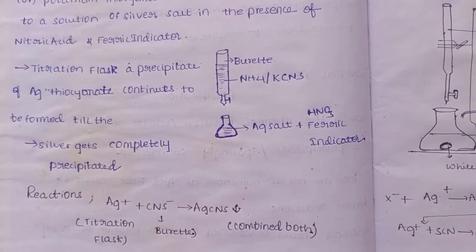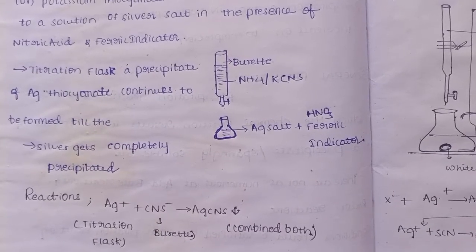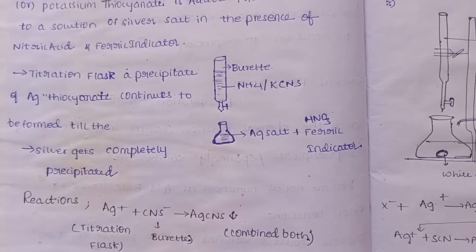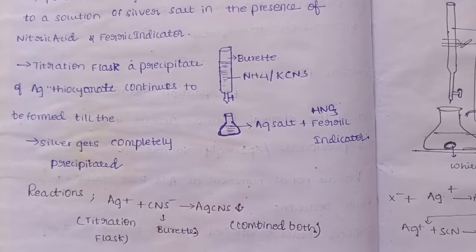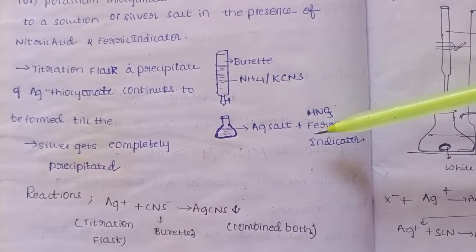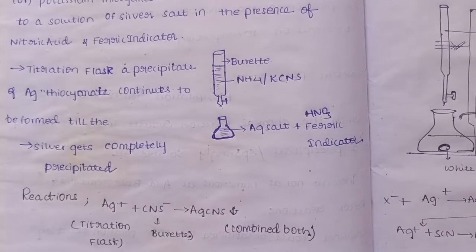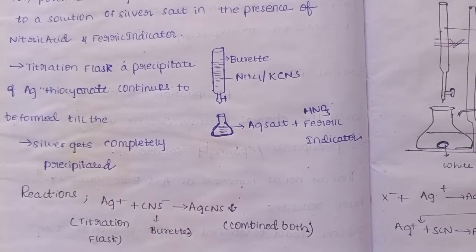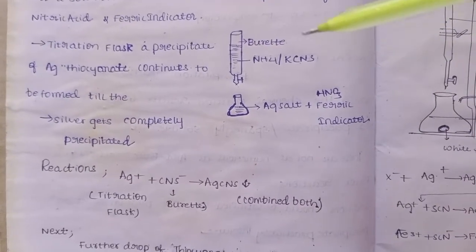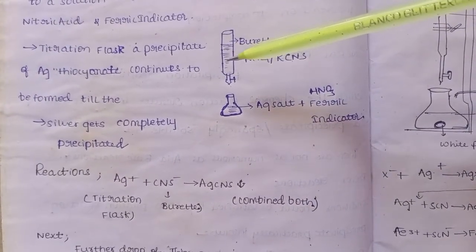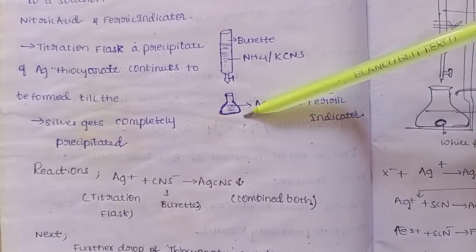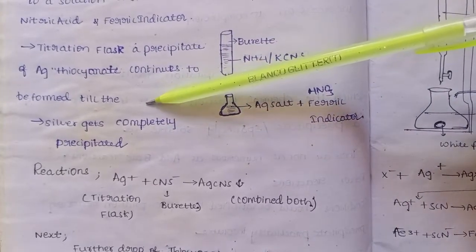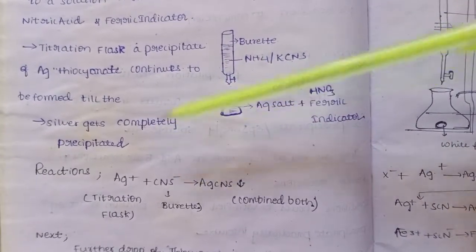The end point of this titration is indicated by a color change. We record the initial and final burette readings to calculate the volume consumed. A precipitate of silver thiocyanate continues to be formed in the titration flask until the silver gets completely precipitated. For example, if 50 ml of silver is present, we need enough thiocyanate to react completely with all the silver.